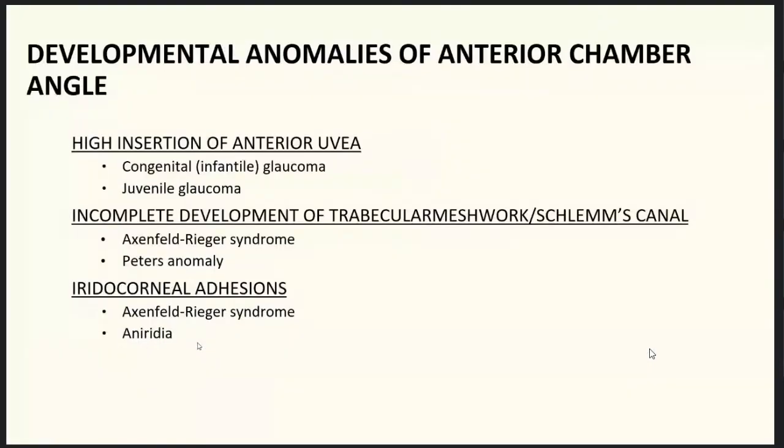Developmental anomalies of the anterior angle include high insertion of the anterior uvea, leading to congenital glaucoma and juvenile glaucoma. Incomplete development of the trabecular meshwork is seen in Axenfeld-Rieger syndrome and Peters anomaly. Endocorneal adhesions are also seen in Axenfeld-Rieger syndrome and amyloidosis.